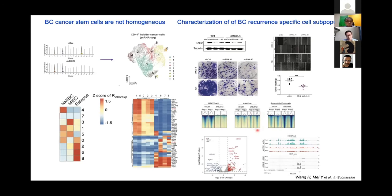Depletion of EZH2 resulted in a globally decreased H3K27 trimethylation marker at peaks, which is a marker for gene repression. In contrast, we see increased signal of histone acetylation and open chromatin, which are markers for gene activation. By RNA sequencing, upon EZH2 knockout, genes related to cancer stemness are downregulated, and a gene called NCAM1 is significantly increased. On the promoter and gene body of NCAM1, we see a gradual loss of H3K27 trimethylation. NCAM1 is a cell adhesion molecule that can promote cell adhesion. We have shown that EZH2 can directly regulate this gene and promote bladder cancer relapse through cancer stem cells.